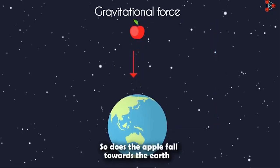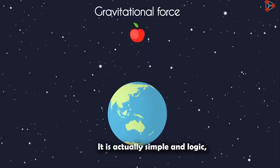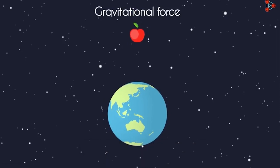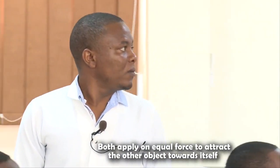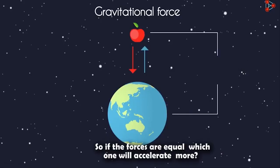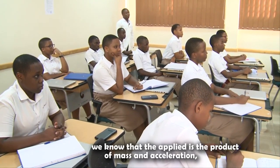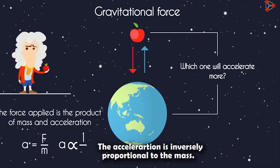Does the apple fall towards the earth, or does the earth move towards the apple, or do both move towards each other? Based on what we learned about gravitational force, both apply an equal force to attract the other object towards itself. So if the forces are equal, which one will accelerate more? Based on Newton's second law, the force applied is the product of mass and acceleration, so acceleration equals force over mass. The acceleration is inversely proportional to the mass.